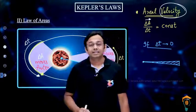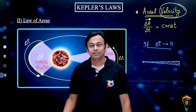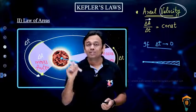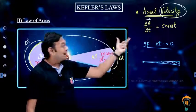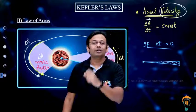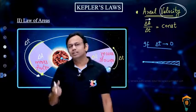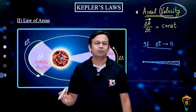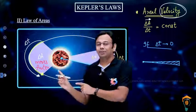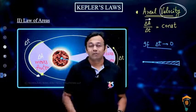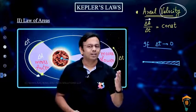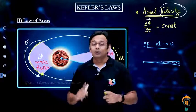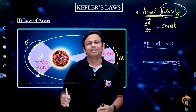This law of areas, even though Kepler gave it just from observations, can now be proven using our knowledge of gravitational force and other physics concepts. We can find exactly what the aerial velocity is and show that it remains constant. Kepler's laws can now be proven. Even the first law can be proven, but the mathematics involved is very complicated and not in our syllabus. The proof of the second law is quite simple, using rotational motion, gravitational force, and some other tools.